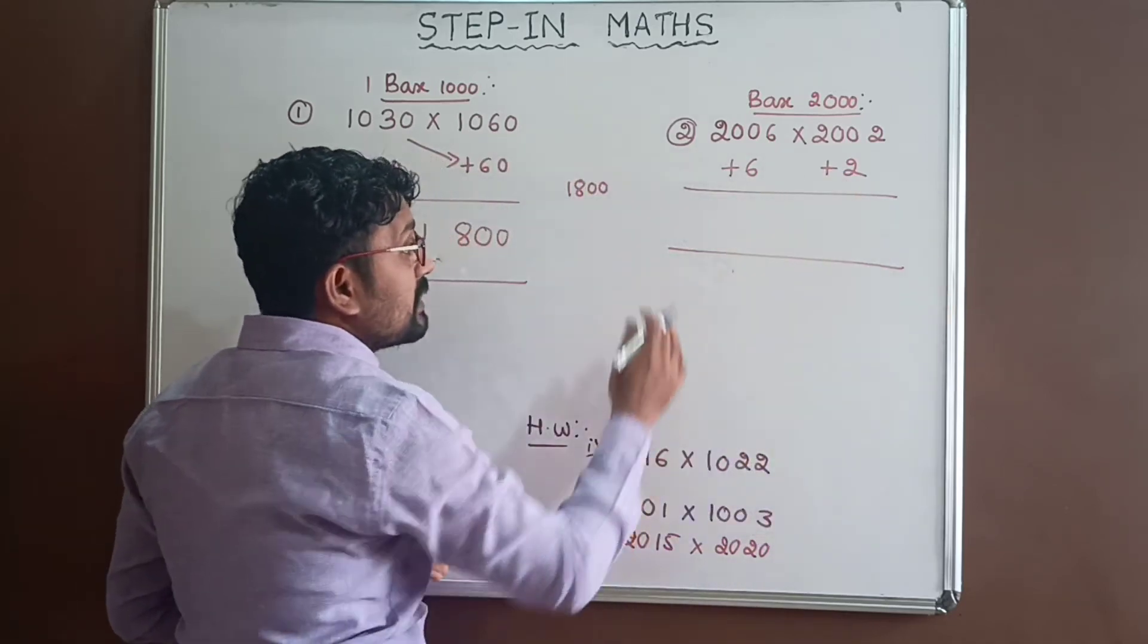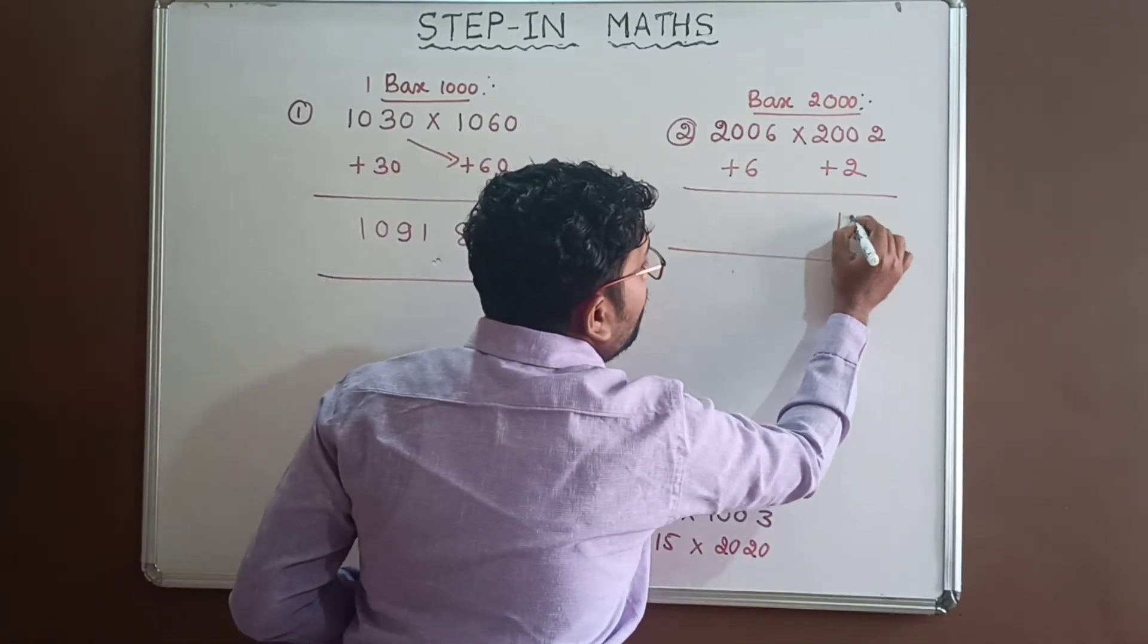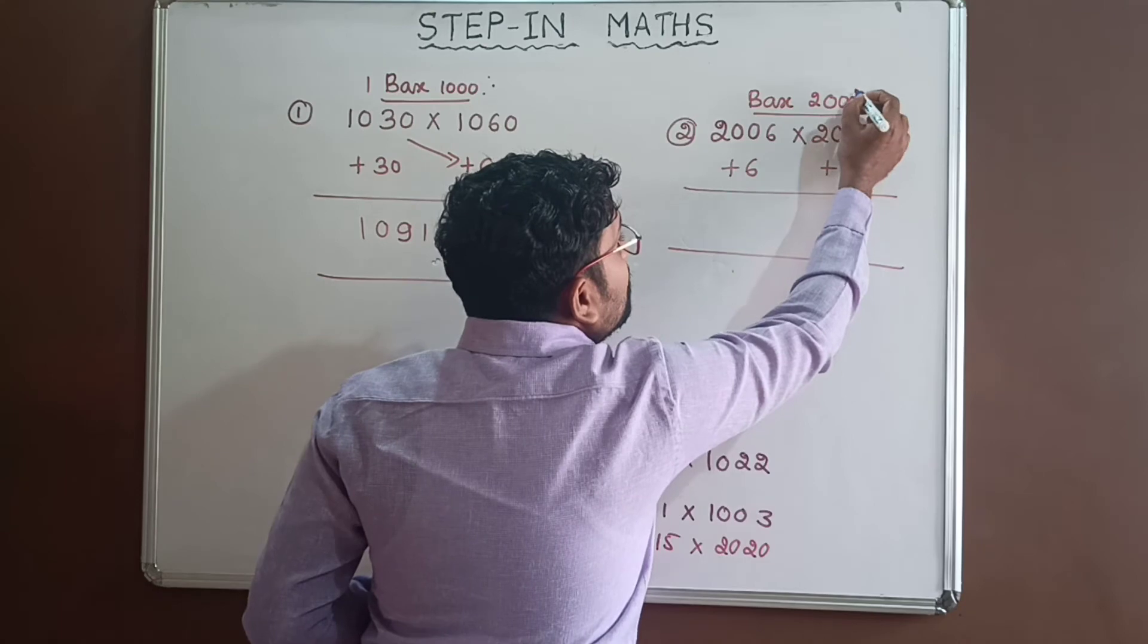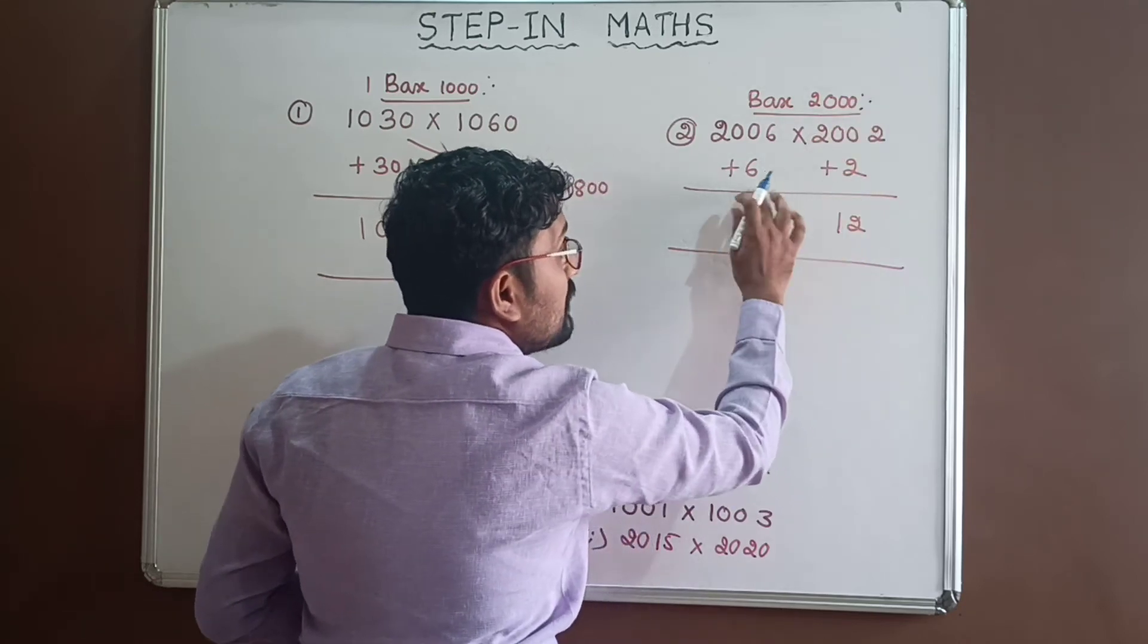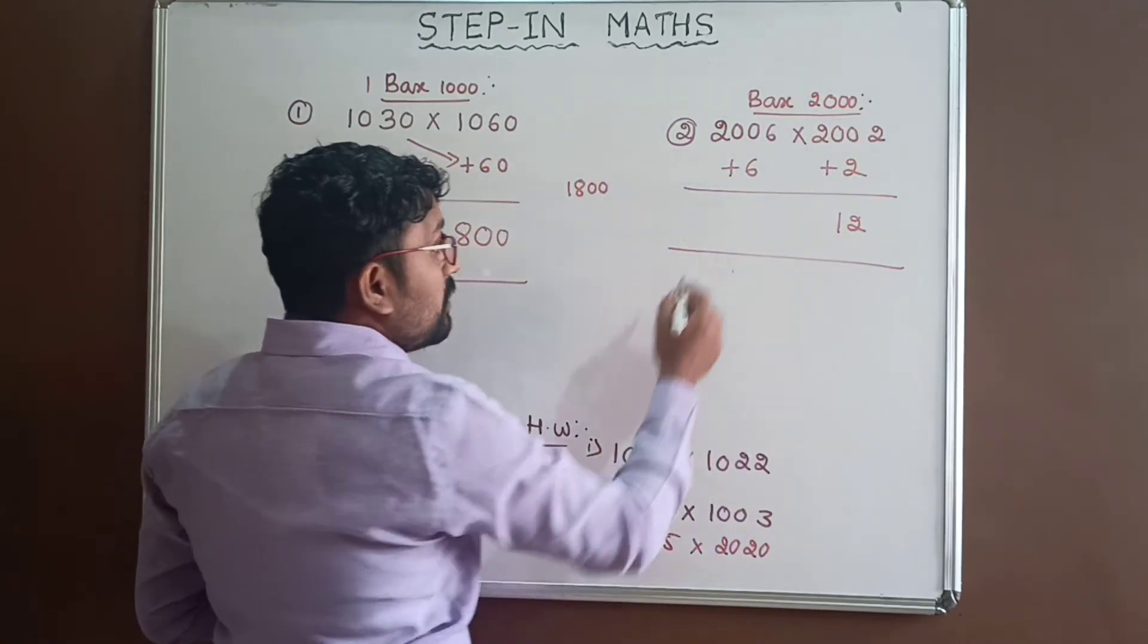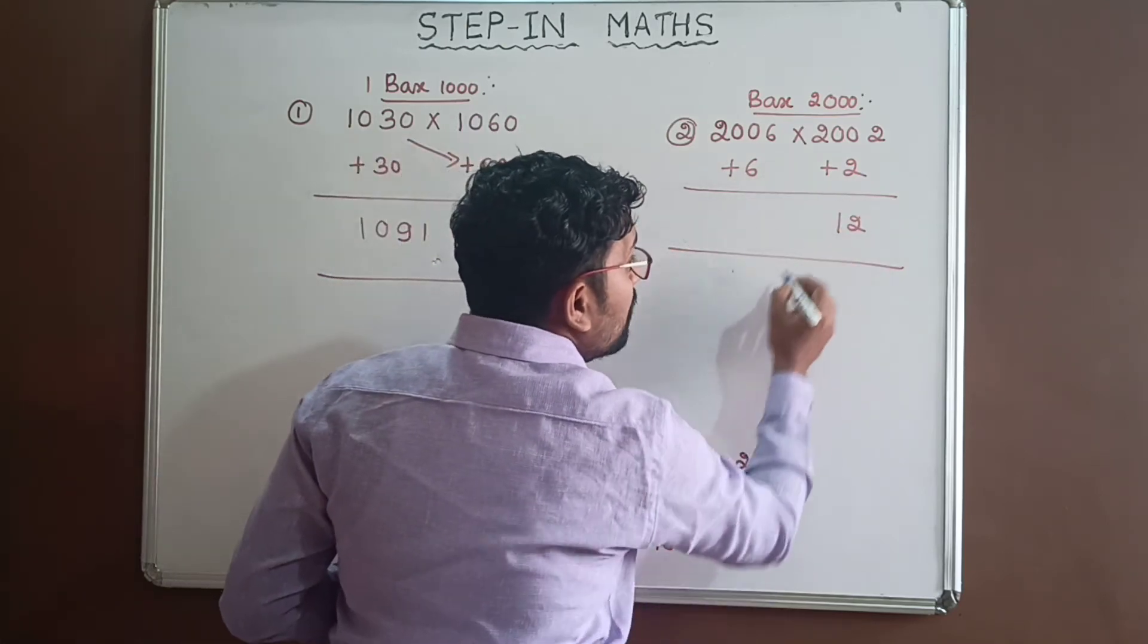Now, we need to multiply. 6 into 2 equals 12. And the base has 3 zeros, so when we multiply these two digits, we should get a triple digit number. Here, we got only a 2 digit number.